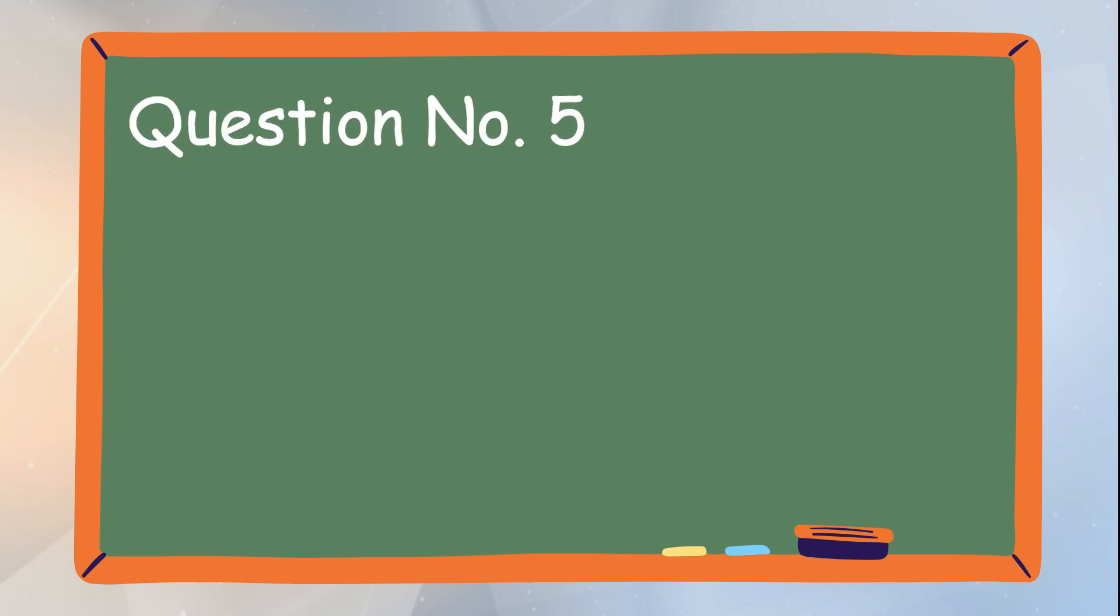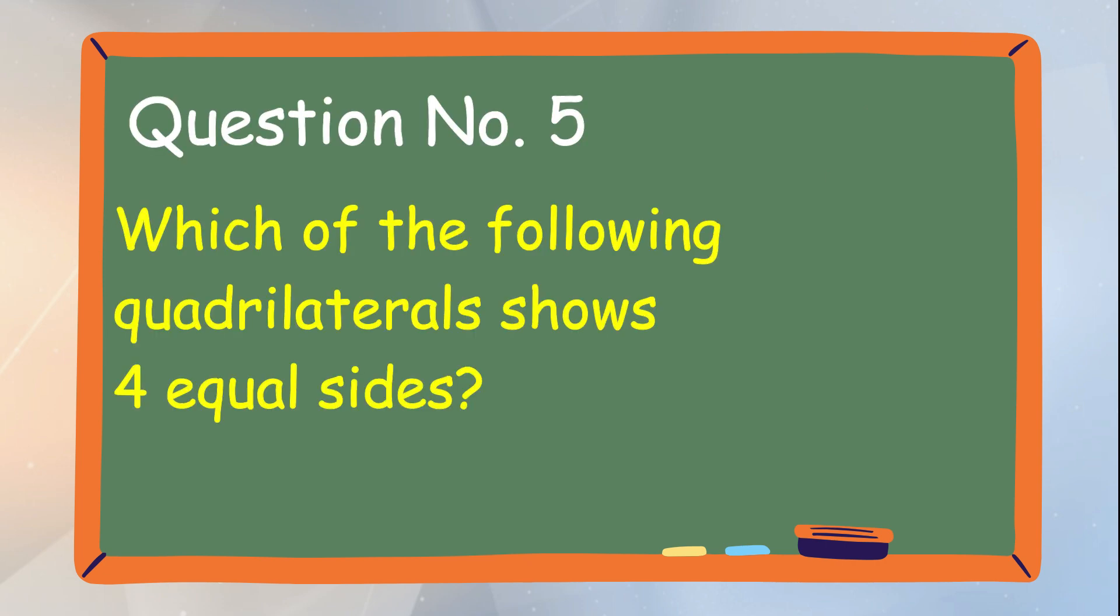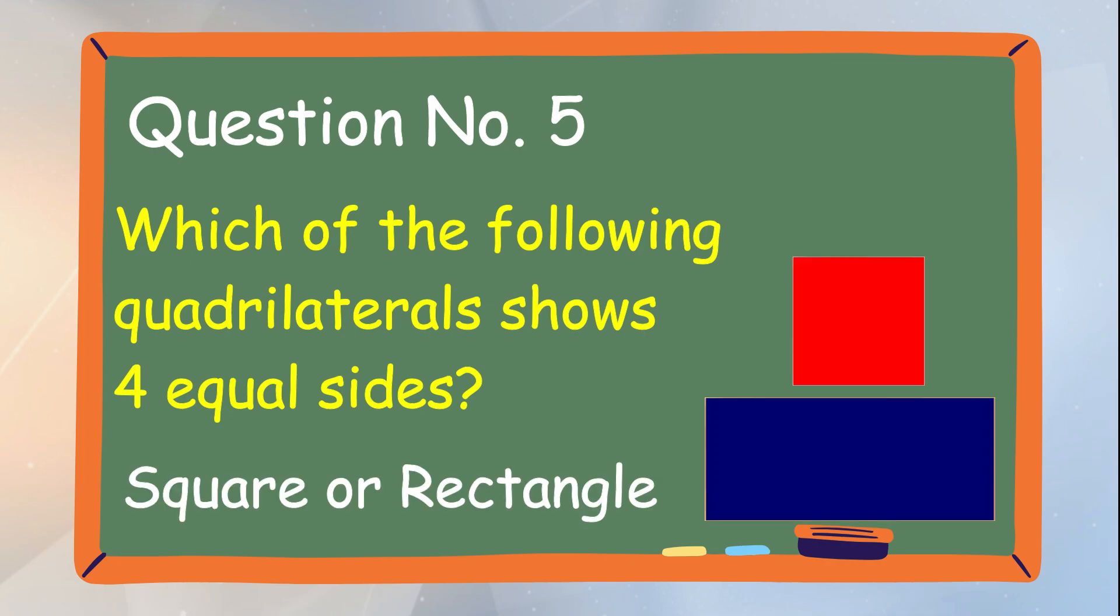And for the last question, question number five. Which of the following quadrilaterals shows four equal sides? Is it the square or the rectangle?